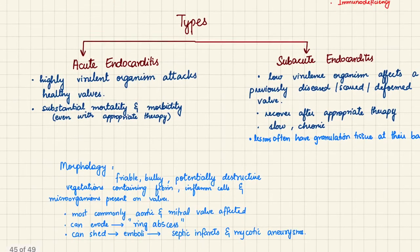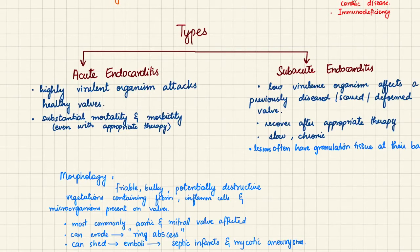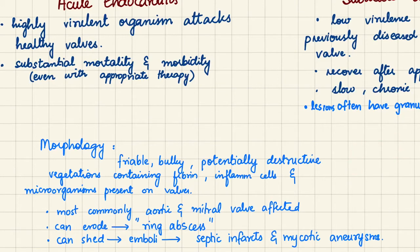In subacute endocarditis, the patient will recover after appropriate antibiotic therapy. One morphological distinction is that acute endocarditis lesions will not have granulation tissue, but subacute endocarditis shows granulation tissue at the bases of vegetations, indicating healing. The vegetations growing on valves or endocardium are friable, bulky, and potentially destructive — they can invade underlying endocardium or valve causing inflammation and fibrosis, and contain inflammatory cells and microorganisms.